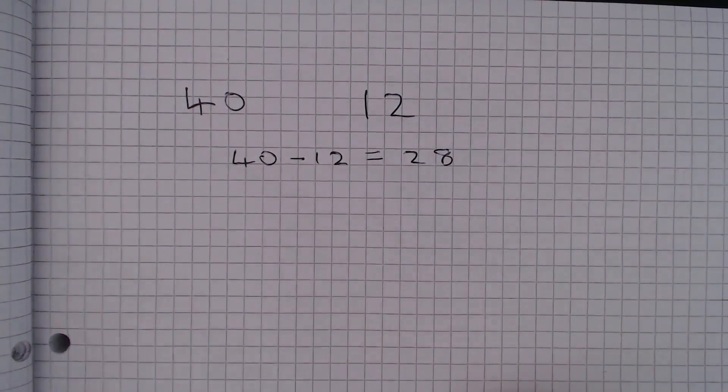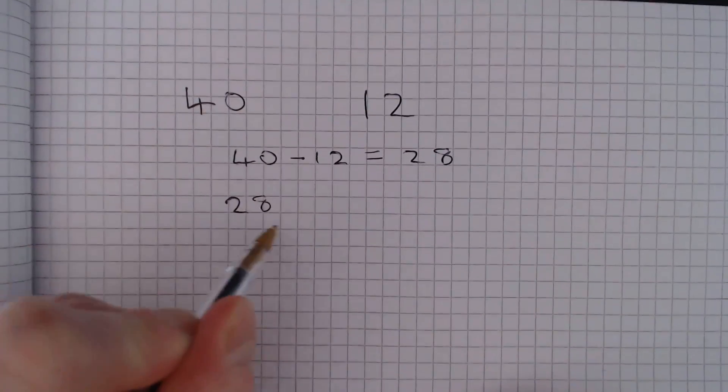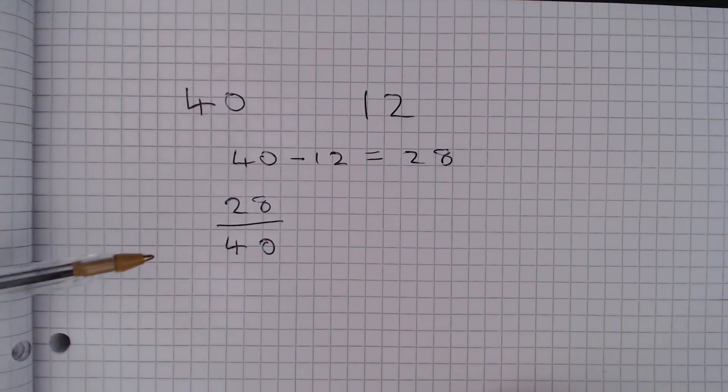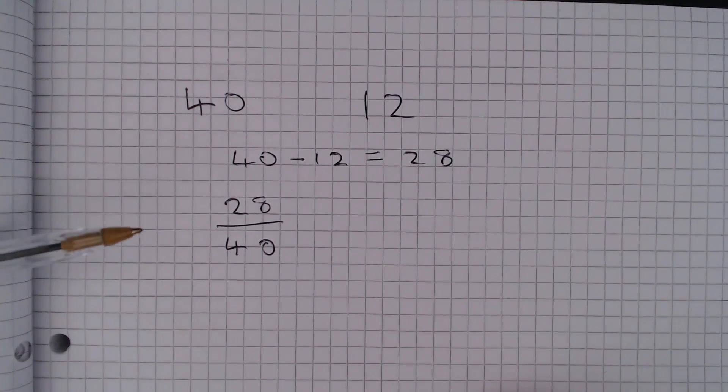So we just need to find the proportion here. So we have 28 out of a total of 40, and we now just need to reduce this fraction as far as possible.